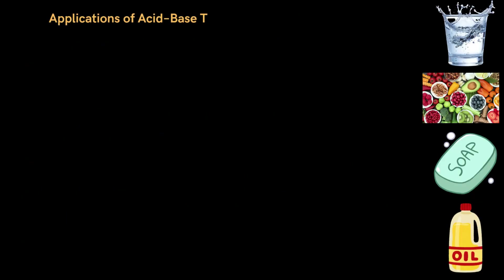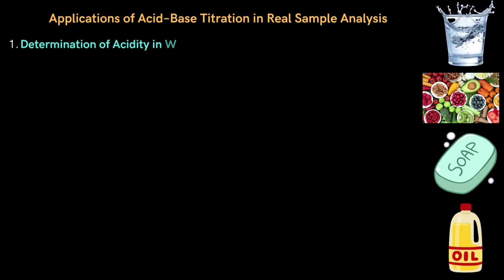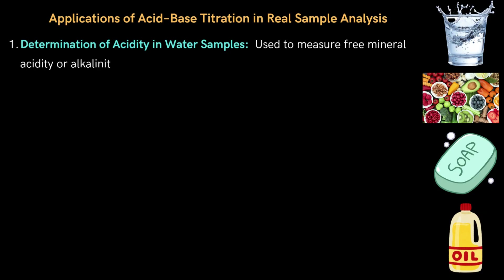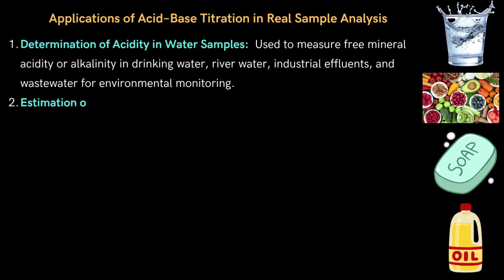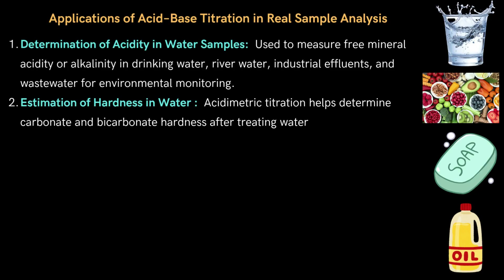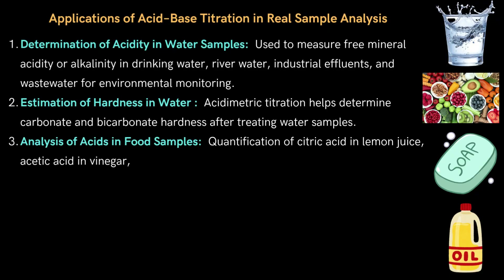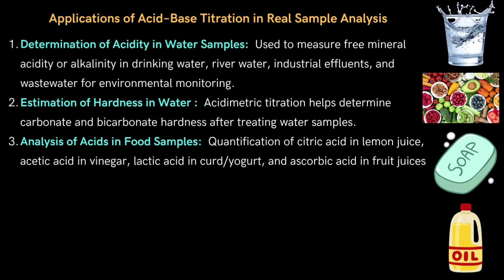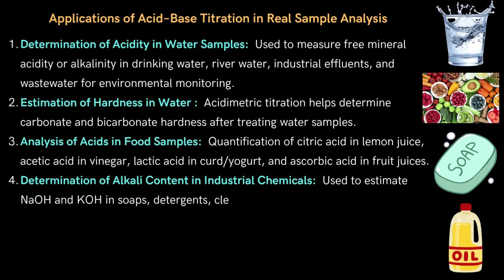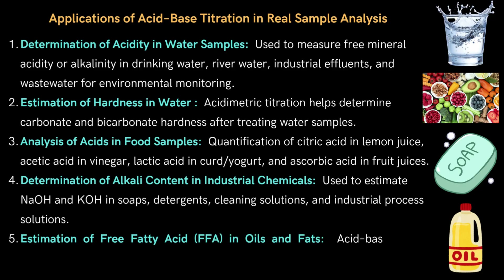Applications of acid-base titration in real sample analysis include: (1) Determination of acidity in water samples — measuring free mineral acidity or alkalinity in drinking water, river water, industrial effluents, and wastewater for environmental monitoring. (2) Estimation of hardness in water — acidometric titration helps determine carbonate and bicarbonate hardness. (3) Analysis of acids in food samples — quantification of citric acid in lemon juice, acetic acid in vinegar, lactic acid in curd or yogurt, and ascorbic acid in fruit juices. (4) Determination of alkali content in industrial chemicals — estimating NaOH in soaps, detergents, cleaning solutions, and industrial process solutions. (5) Estimation of free fatty acid (FFA) in oils and fats — determining rancidity and quality of edible oils and biodiesel.